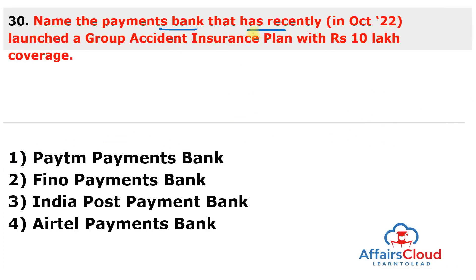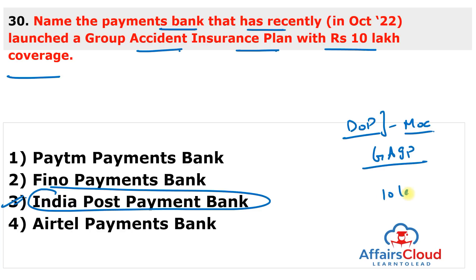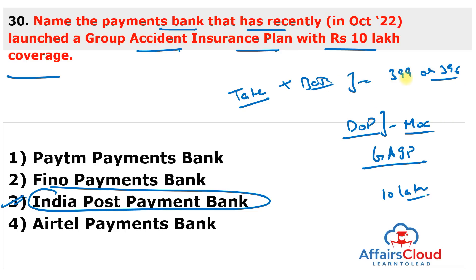Next question: which payment bank recently launched a group accident insurance plan with Rs. 10 lakh coverage? The answer is India Post Payments Bank. India Post Payments Bank, operating under the Department of Posts under the Ministry of Communication, introduced a group accident insurance plan with accidental death coverage of Rs. 10 lakh. The plan is available in collaboration with Tata AIG and Bajaj Allianz General Insurance companies for a premium of Rs. 399 or Rs. 396 annually, available to anyone between 18 to 65 years of age.